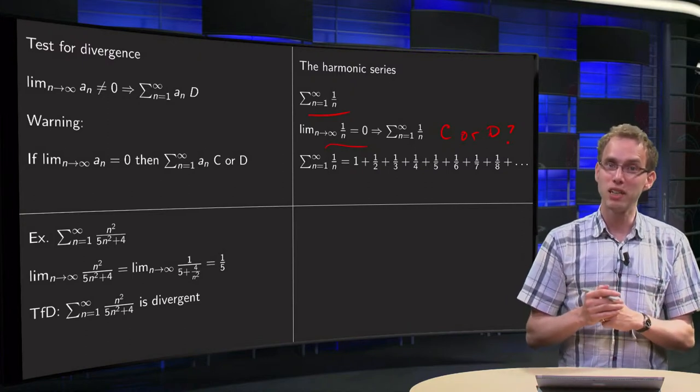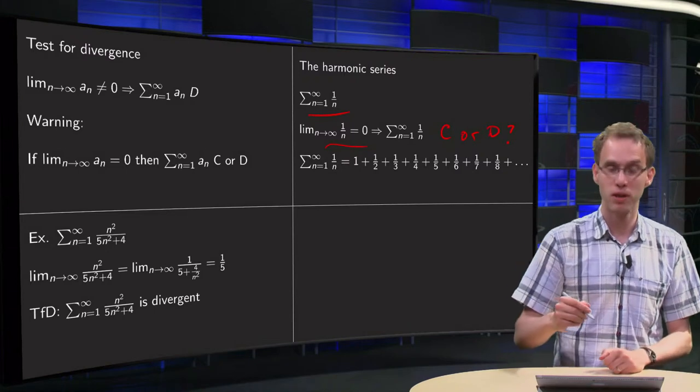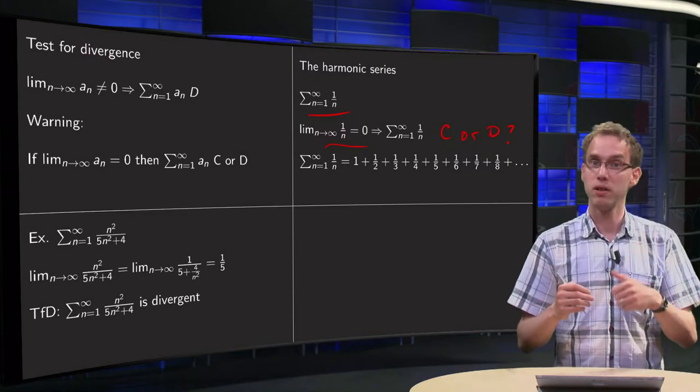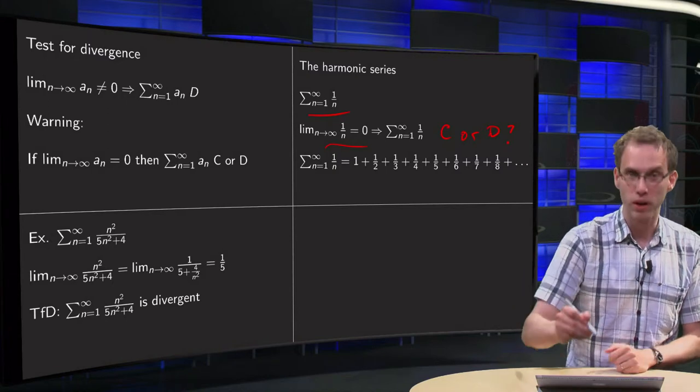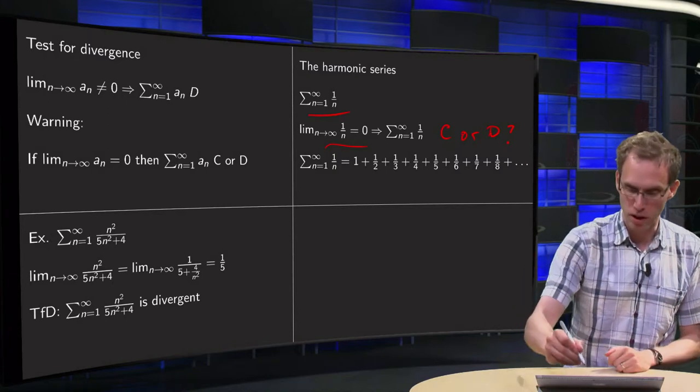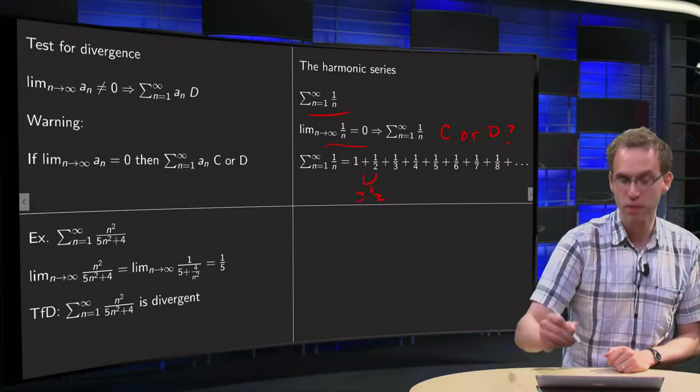And we can actually deduce what is happening as follows. Let's write down the first few terms: 1 plus 1/2 plus 1/3, etc. Then I know the 1 is bigger or equal than 1/2, 1/2 bigger or equal than 1/2. Then we do the following trick.